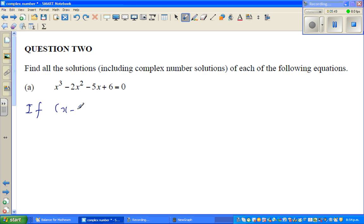So this is a rule. If x minus 1 is a factor, then the sum of the coefficients, the coefficients are 1, minus 2, minus 5, and 6 will become 0. So the sum of the coefficient should be 0. So 1, minus 2, minus 5, plus 6, is it a 0? So yes, it is a 0. So sum of the coefficient is 0, so x minus 1 is a factor.